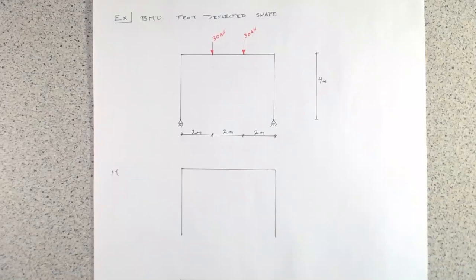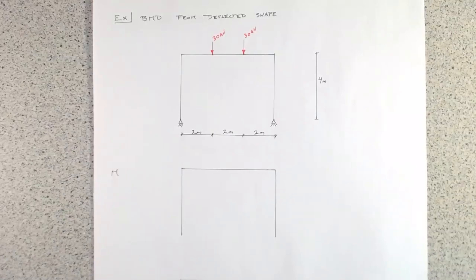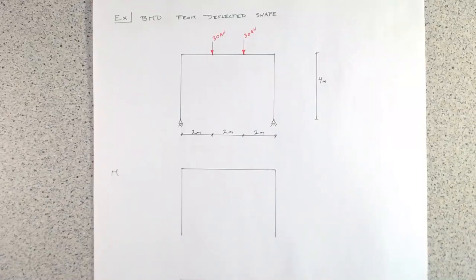In this video we are going to use the skills developed in previous videos to draw deflected shapes of structures and use those deflected shapes to identify the bending moment distribution and draw a bending moment diagram. This is intended to be an intuitive understanding of how structures behave. By plotting on the tension side, we know which side the moment is on, and from the type of loading — point loads, distributed loads, etc. — we can determine the bending moment distribution and work out expected shears and axial forces.